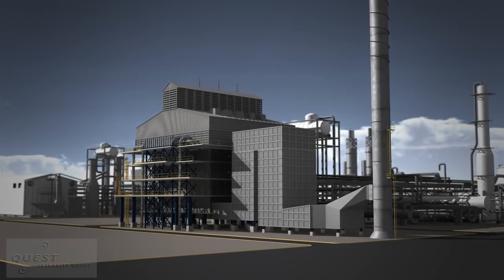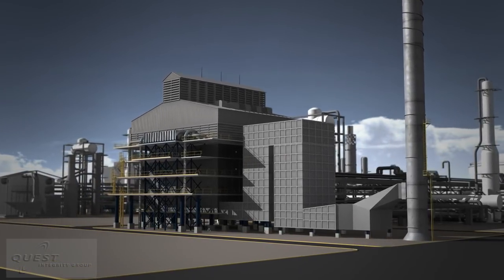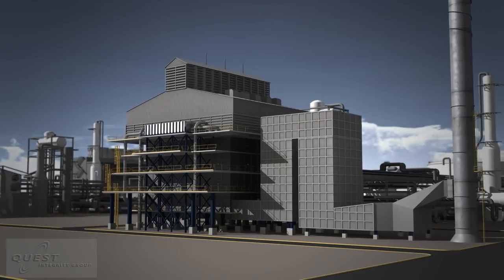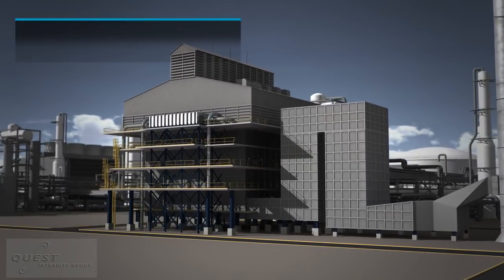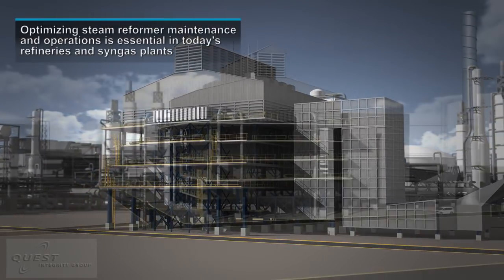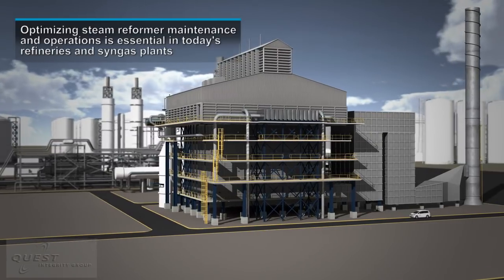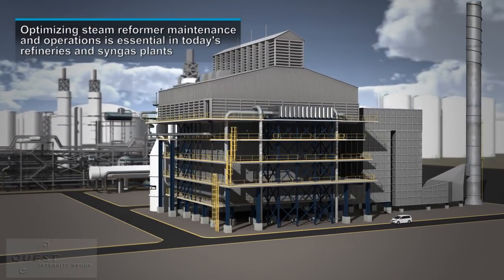The primary steam reformer is a critical operating asset in refineries and syngas plants. Reformer tubes are a critical component within the steam reformer and operate at high pressures, high temperatures, and the upper limits of the metallurgy.